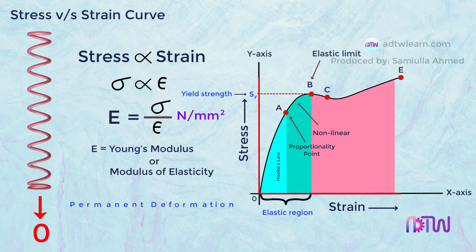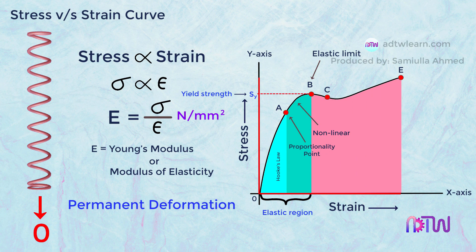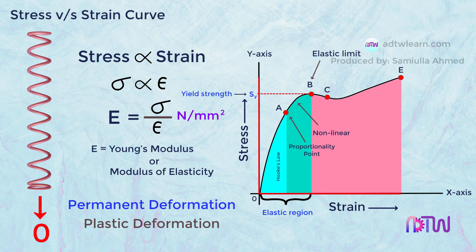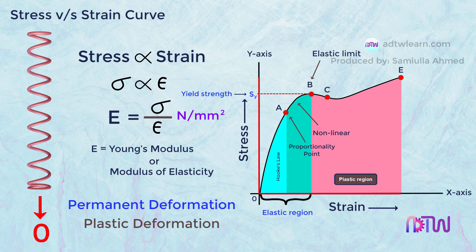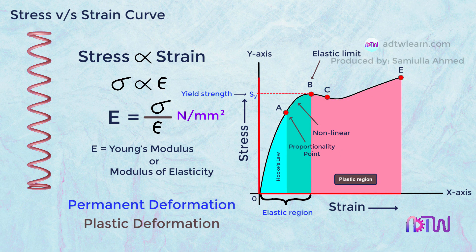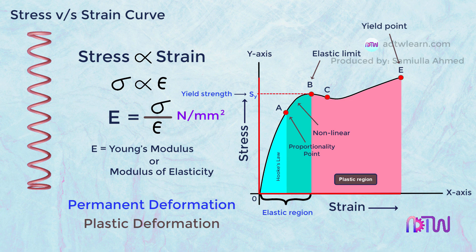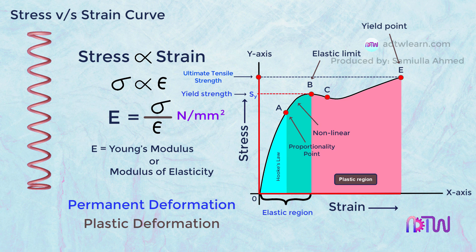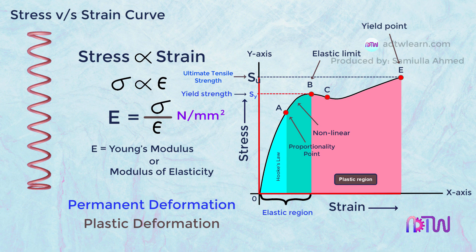Here, the material will have a permanent deformation. This deformation is called plastic deformation, and this region is called a plastic region. The point E is called the yield point, and the stress corresponding to this point is called ultimate tensile strength, and is denoted by S-U.